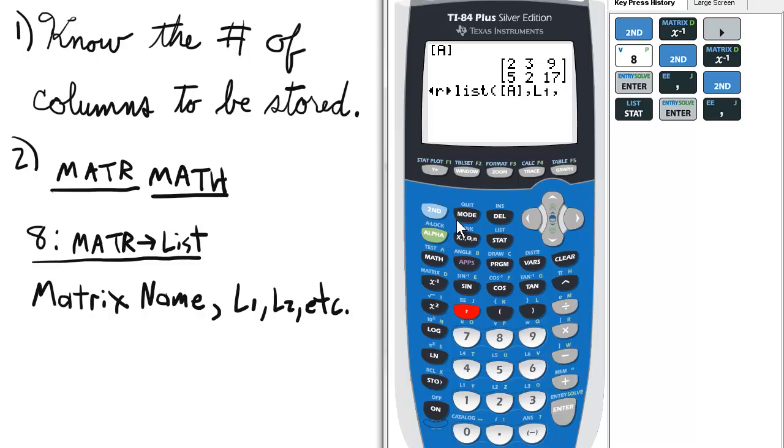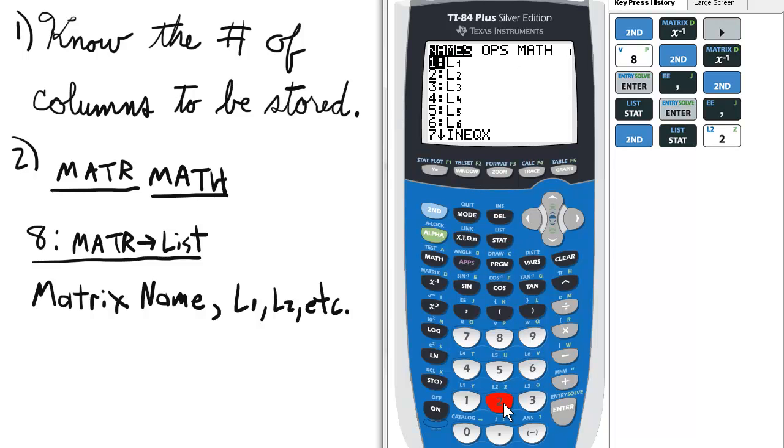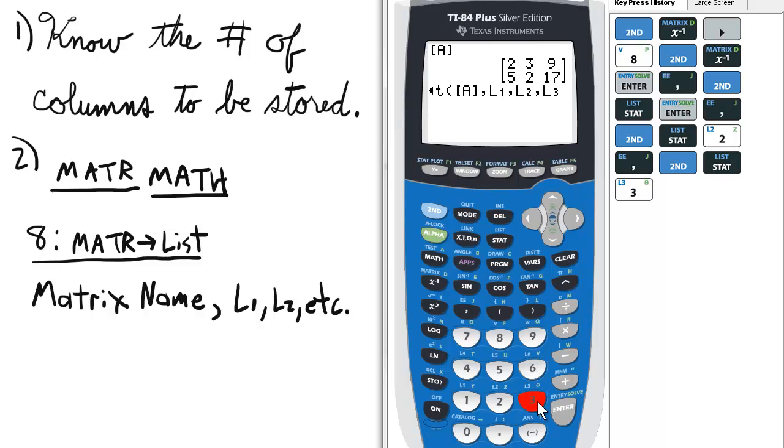And then I have to go back to my list menu by pressing second stat, and then 2 for L2, comma, and then back to the list, and then L3.